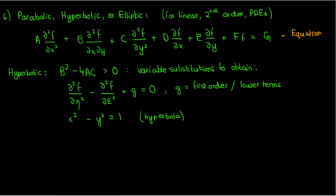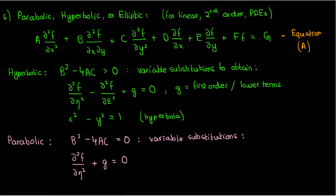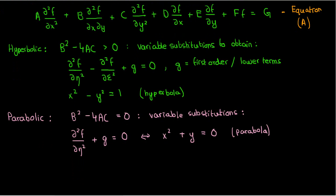Similarly, a PDE of the form given in equation A is parabolic if B² - 4AC is exactly 0. In this case, if I use the right variable substitutions, then we can reduce a parabolic PDE to d²f/dη² plus g equals 0 in standard form. Again, g represents the first and lower-order terms. Now, this equation is very similar to the equation of a parabola in the x-y-plane, which is something like x² plus y equals 0, and this is why such a PDE is called parabolic.